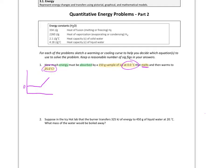What we end up with involves both phase energy and thermal energy. We're going to have two calculations, which I'll call A and B, and then add our final answers together at the end to get the total energy.